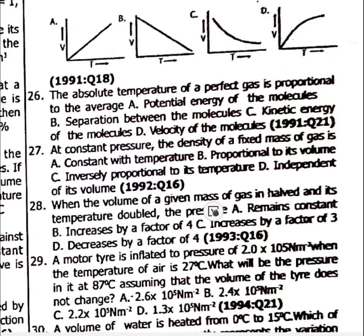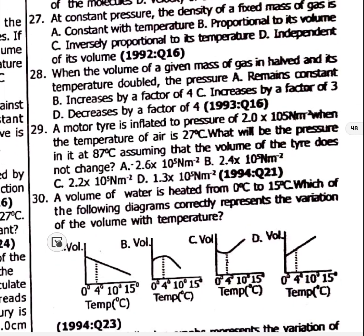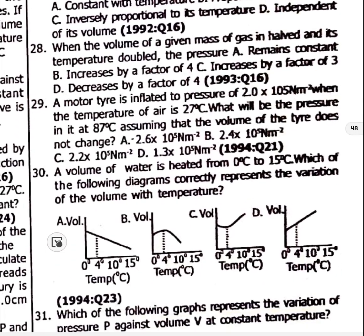Question 28: When the volume of a given mass of gas is halved and its temperature is doubled, the pressure will increase by a factor of 4 — option B.